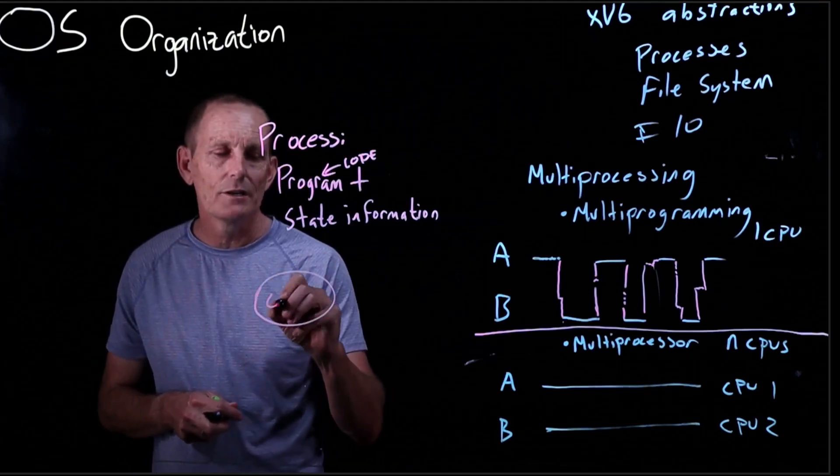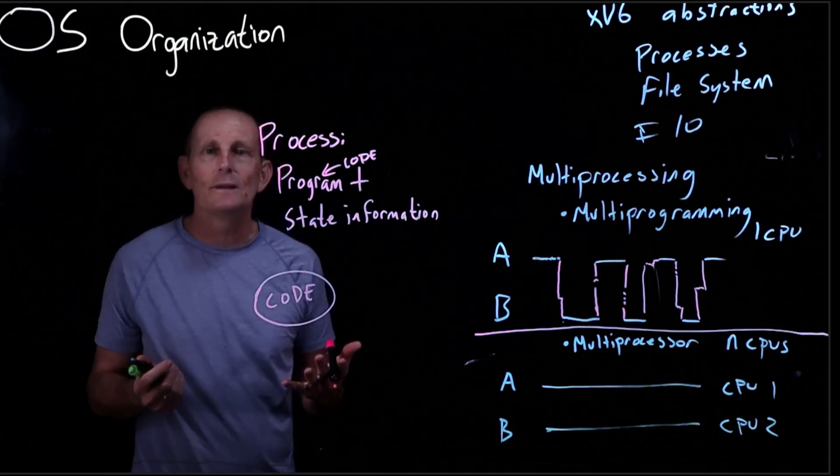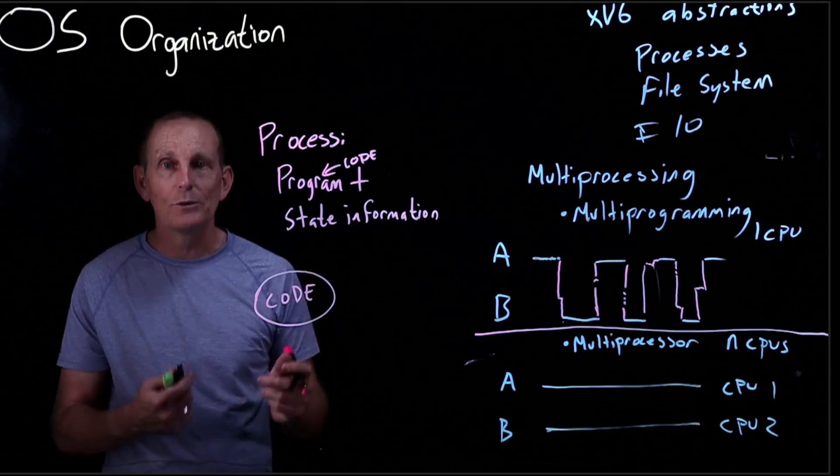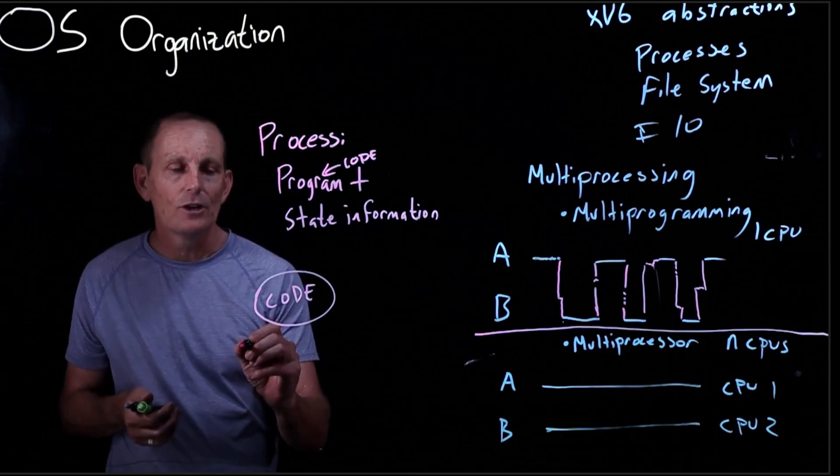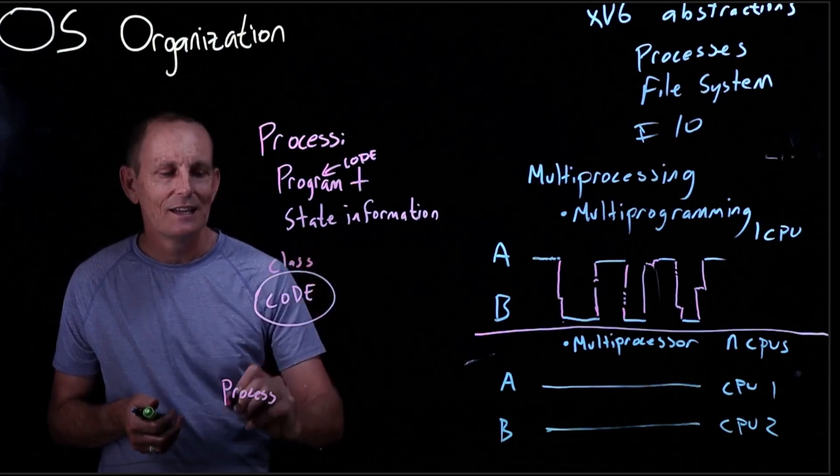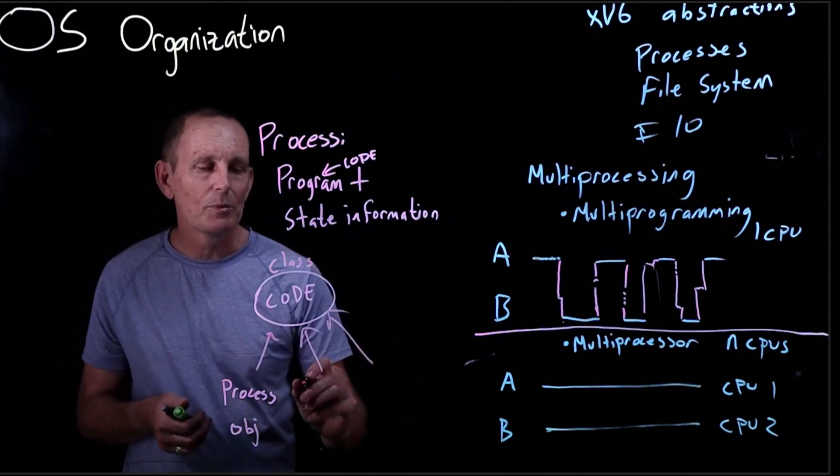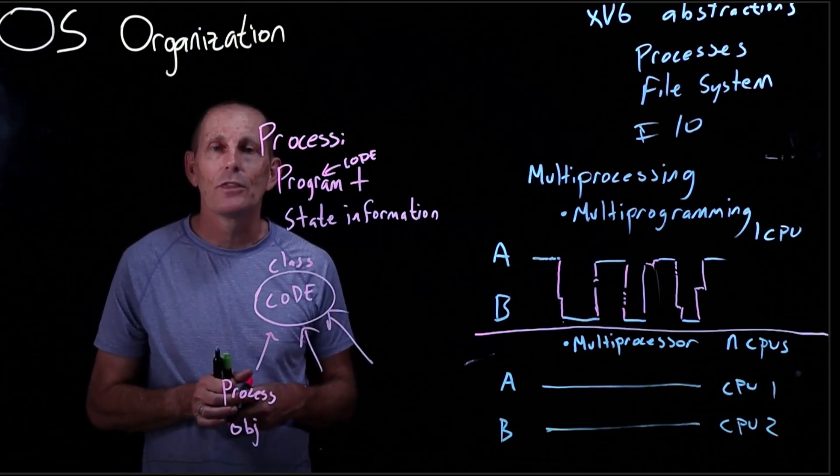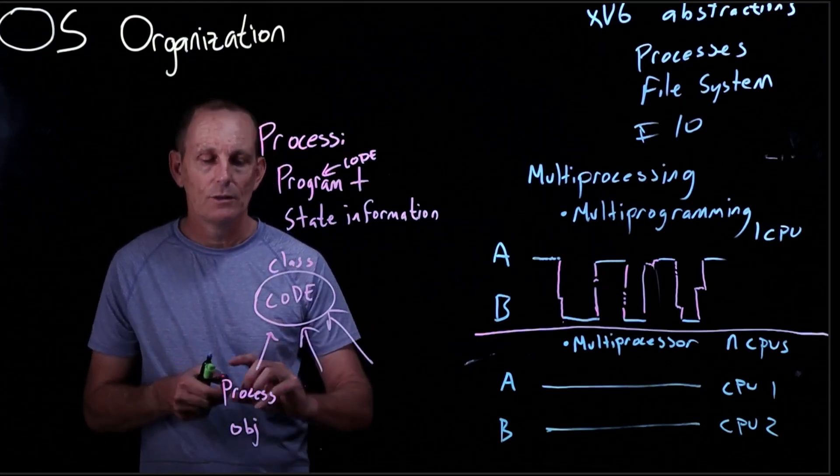One way you can think of it is a program, let's say we have our code here, this is a recipe for creating a process. But in order to actually create a process, we've got to load this into memory, assign some memory to it, initialize some registers, and then start it running. So the process, this is sort of like the class and this is like the object. And it's also worth noting we could have multiple processes based on the same code. For example, I can be running vim on three different files at once in three different windows. That's the same code, different processes.